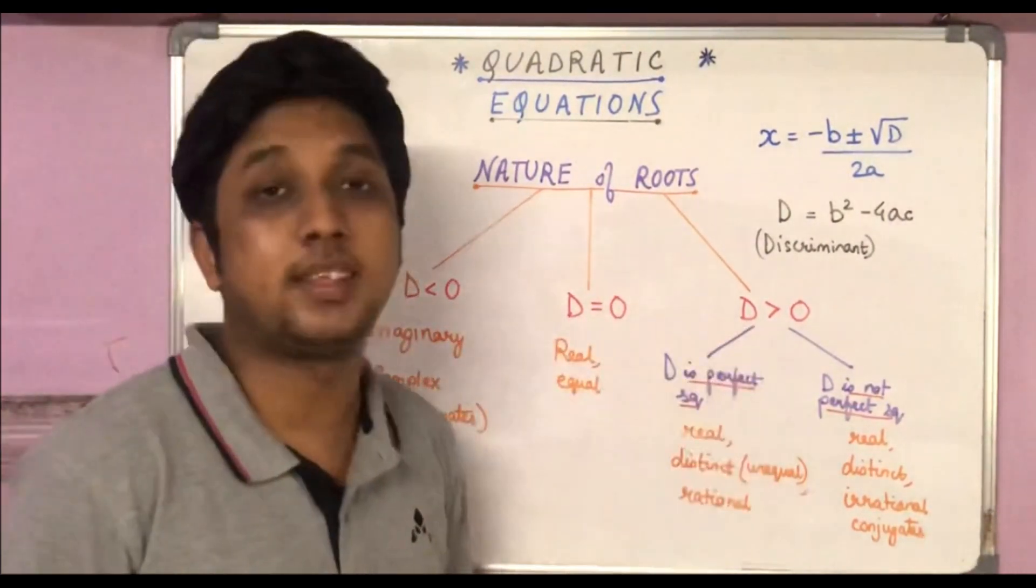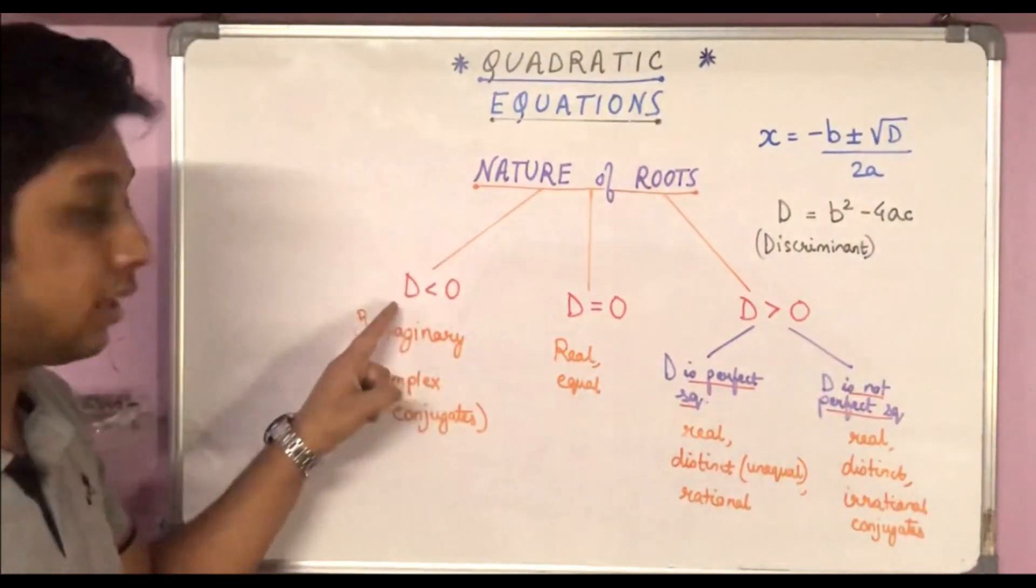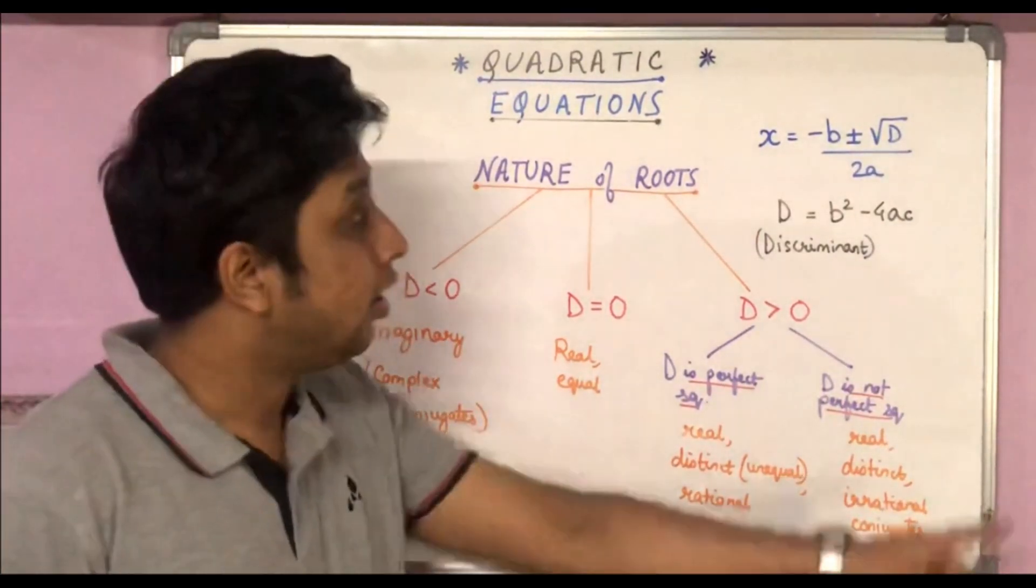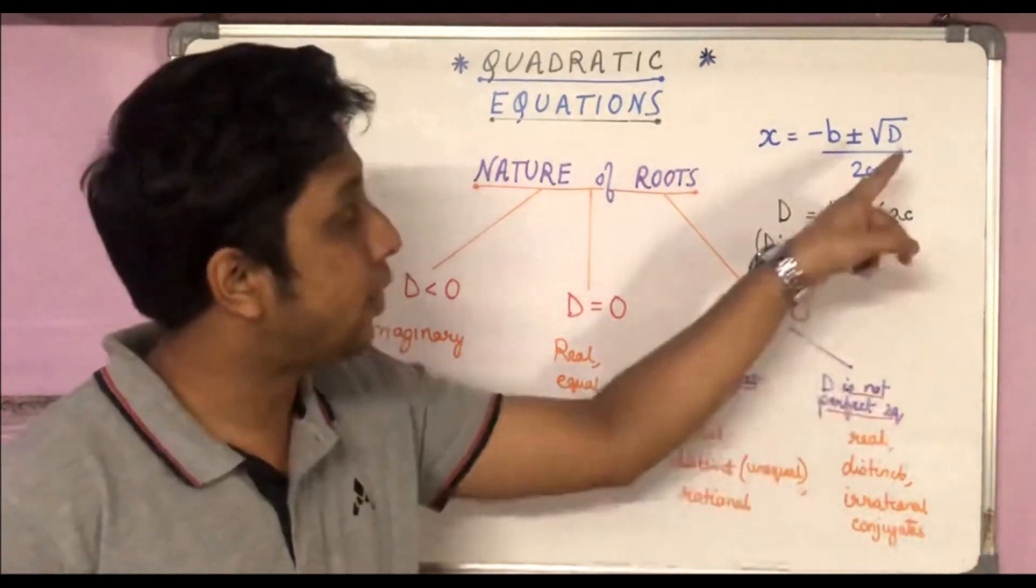If D is less than 0, that means D's value is negative. Square root of a negative number is not real.